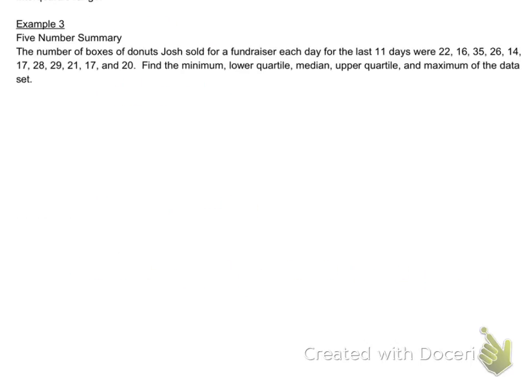So, in this problem, the number of boxes of donuts Josh sold for a fundraiser each day for the last 11 days were 22, 16, 35, 26, 14, 17, 28, 29, 21, 17, and 20. I want you to find the minimum, the lower quartile, the median, the upper quartile, and maximum of the data. These are going to be important things because we are going to need to find these to do, solve, or finish some other problems. And so, start off with the easy ones. What's the minimum number? Well, they're not in order, are they? So, I would personally put them in order. Because to find the upper and lower quartiles, you're going to need to find the median first.